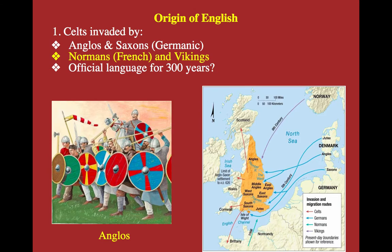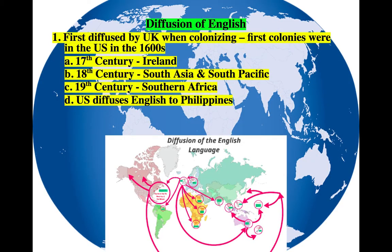All these groups are part of that Germanic branch because they came in, invaded, and mixed with the language already there, which was a little bit of Celtic. Obviously, English became much more dominant once they kicked out the French, and it started diffusing around the world as they began to colonize — first in North America in the 1600s, then in the 17th century they took over Ireland and forced them to speak English. In the 18th century they expanded to South Asia and the South Pacific, and in the 19th century, Southern Africa, as we discussed with Afrikaans.